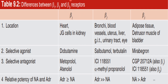Differences between beta-1, beta-2, and beta-3 receptors: beta-1 is located at the heart and kidney; beta-2 is located on bronchi, blood vessels, uterus, liver, gastrointestinal tract, urinary tract, and eye; beta-3 is located on adipose tissue and detrusor muscle of the bladder. Selective agonist for beta-1 is dobutamine; for beta-2 are salbutamol and terbutaline; for beta-3 is mirabegron. Selective antagonist for beta-1 is metoprolol. Regarding potency: for beta-1, adrenaline is equal to or more potent than noradrenaline; for beta-2, adrenaline is more potent than noradrenaline; for beta-3, noradrenaline is more potent than adrenaline.